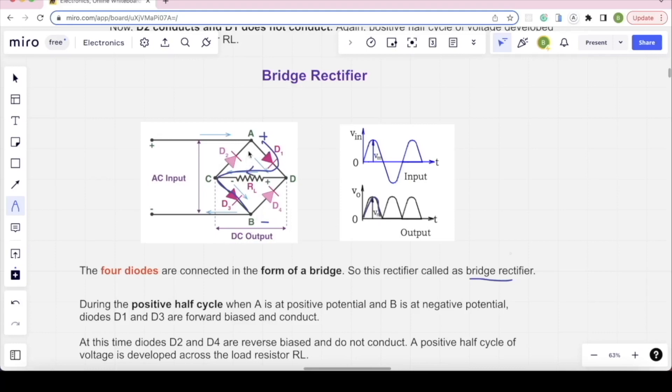For negative half cycle, this is negative and positive. At that time, D2 will conduct and D4 will conduct. Current will flow in this direction. Same direction will flow in the load. That will be output. For negative half cycle, this will be output.